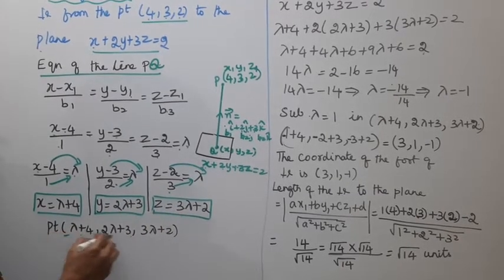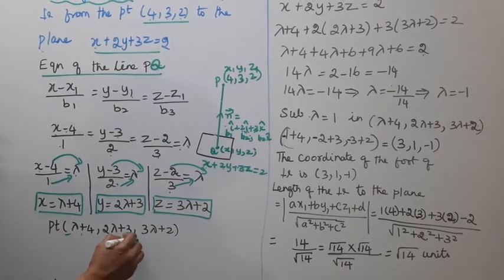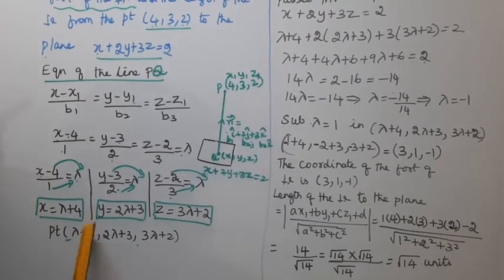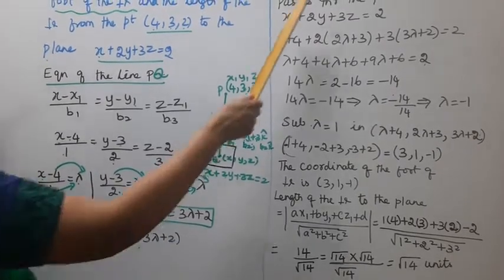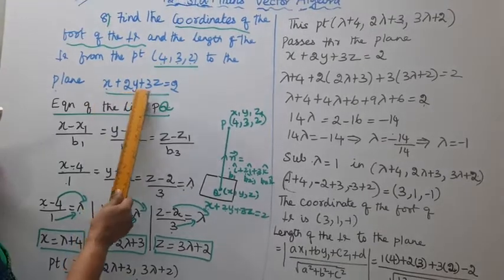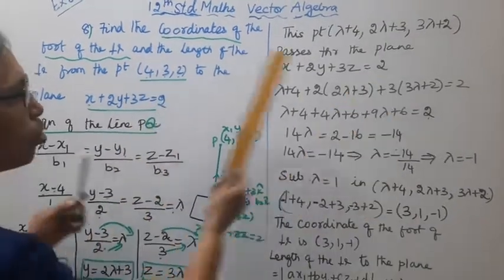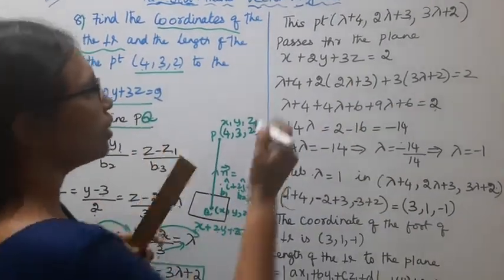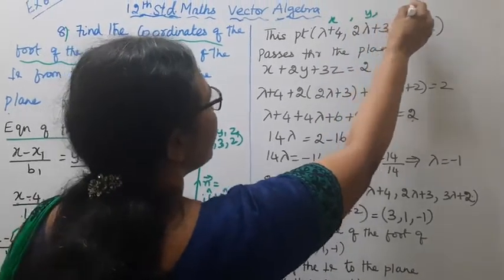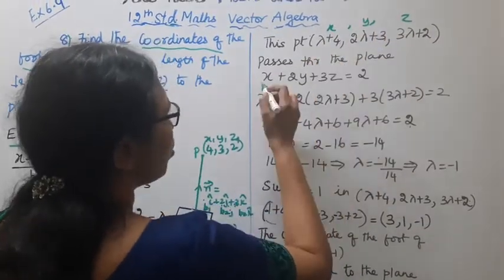The point (x, y, z) on line PQ also passes through the plane x + 2y + 3z = 2. Substituting x = λ + 4, y = 2λ + 3, and z = 3λ + 2 into the plane equation: (λ + 4) + 2(2λ + 3) + 3(3λ + 2) = 2.